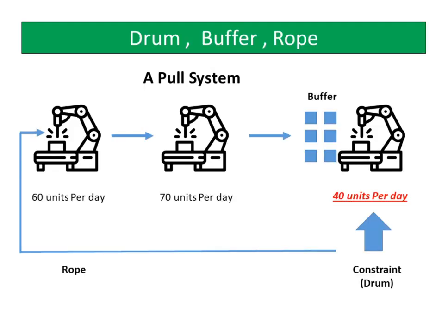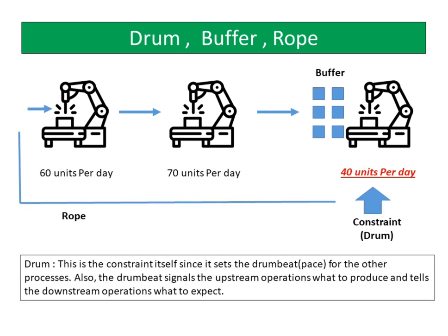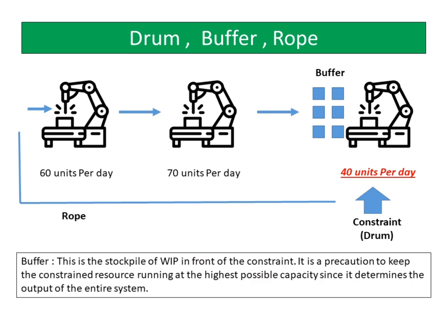Drum Buffer Rope (DBR) is a method of synchronizing production to the constraint while minimizing inventory and work in process. The drum is the constraint itself, since it sets the drumbeat pace for the other processes. The drumbeat signals the upstream operations what to produce and tells the downstream operations what to expect. The buffer is the stockpile of WIP in front of the constraint. It is a precaution to keep the constrained resource running at the highest possible capacity since it determines the output of the entire system. Typically, there are two buffers: the constraint buffer, immediately before the constraint, which protects the constraint.